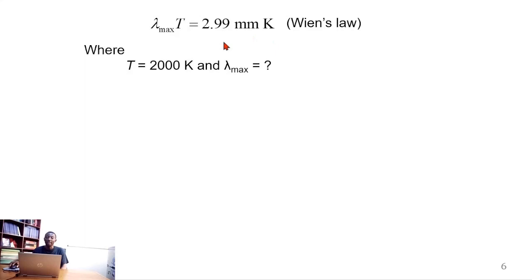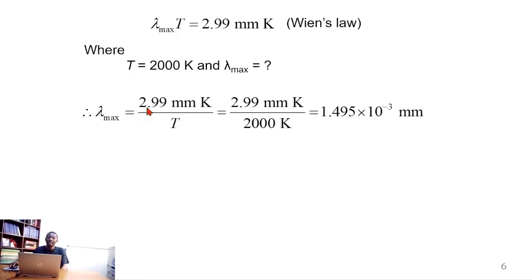And where the temperature is 2000 Kelvin, lambda max is unknown. We make lambda max the subject of the formula by dividing both sides by T.